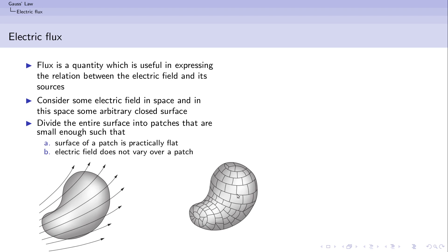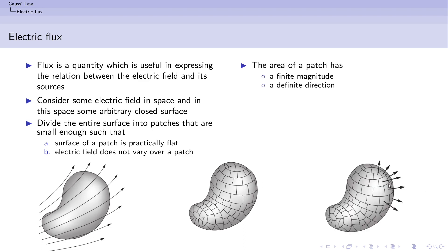The second condition is that the electric field over any patch does not vary much — it more or less remains constant over any particular patch. If we look at any one of these patches, we realize that each patch has a definite area and a definite orientation. For instance, this patch is pointing in the upward direction, this one is pointing to the right, and this one is pointing somewhere between right and downwards. So every patch has a certain definite area and a definite direction. Since we have both magnitude and direction, we can represent these areas as vectors.